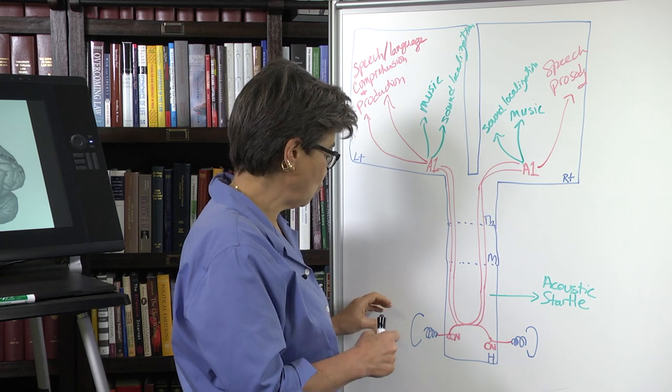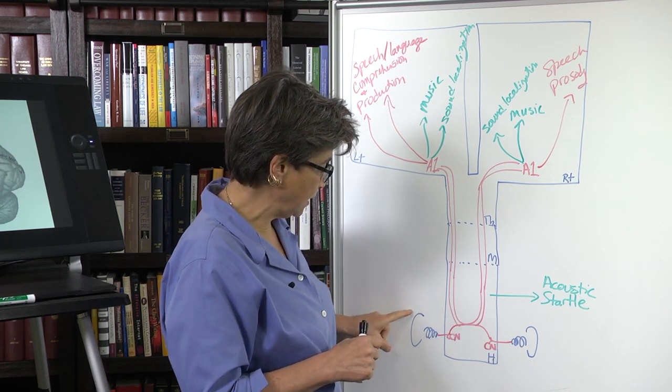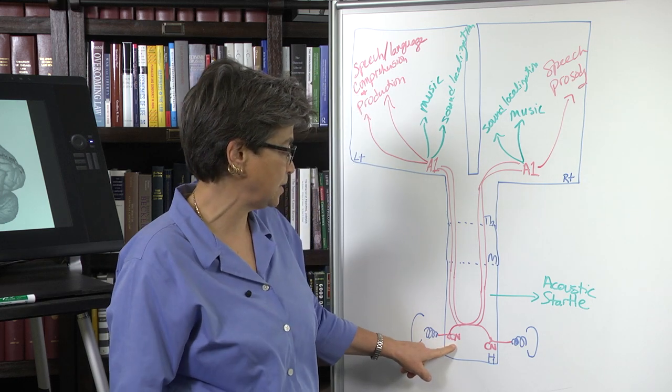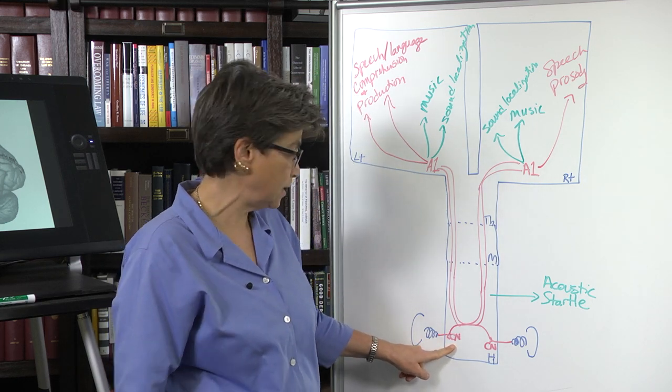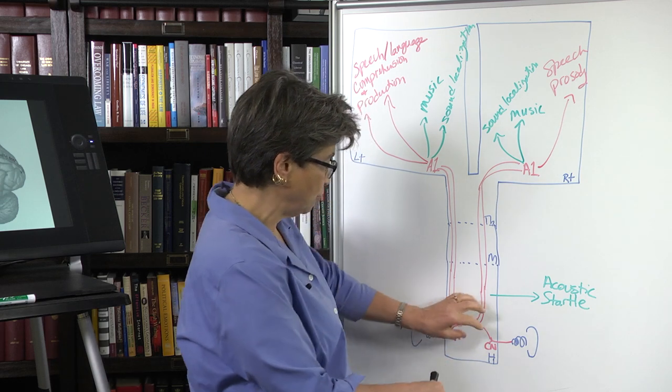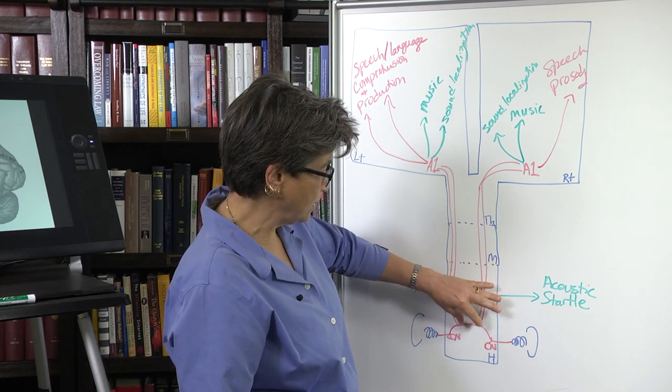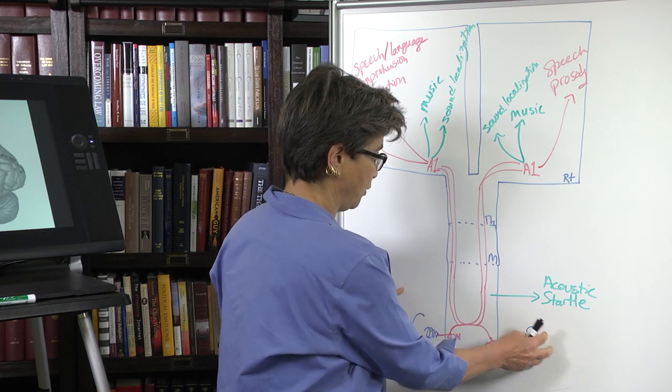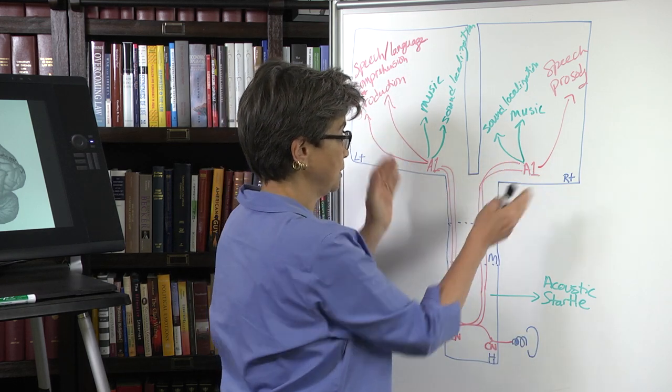And what you see is that the ear with the cochlea enters the hindbrain, synapses in the cochlear nuclei, and after the cochlear nuclei, the pathways, the auditory pathways rise in parallel, so that information from both ears is going to both sides.